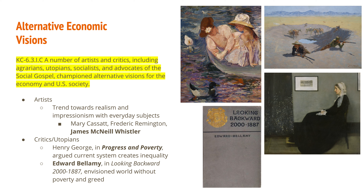The critics who were utopians include Henry George, who writes a book called Progress and Poverty, arguing that the current capitalist system is creating a lot of inequality and therefore cannot be as good as we think. Edward Bellamy is another one. His book, called Looking Backward, 2000 to 1887, envisions himself in the year 2000 looking back at 1887 and how unequal the system was compared to his vision where poverty, greed, and inequality had all gone away — which is why he was called a utopian.